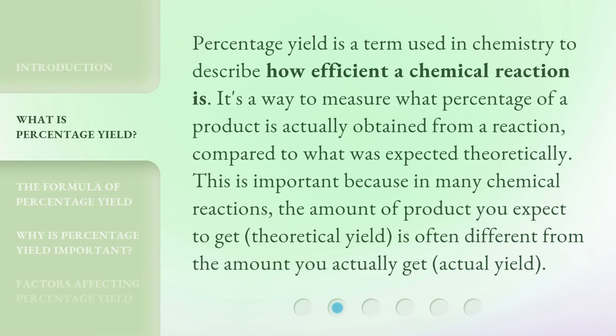Percentage yield is a term used in chemistry to describe how efficient a chemical reaction is. It's a way to measure what percentage of a product is actually obtained from a reaction compared to what was expected theoretically.